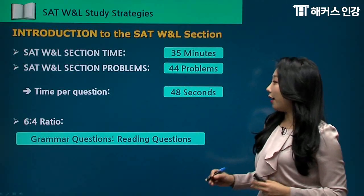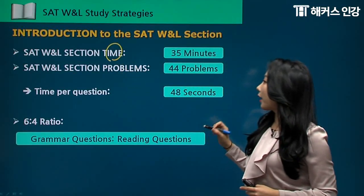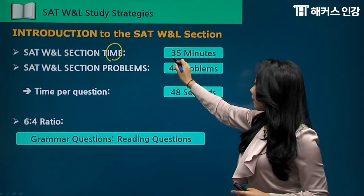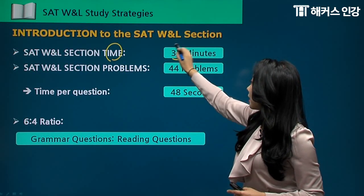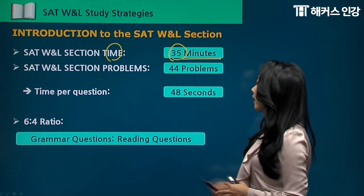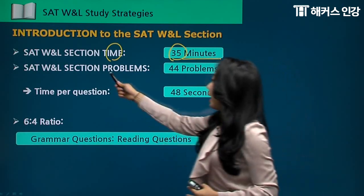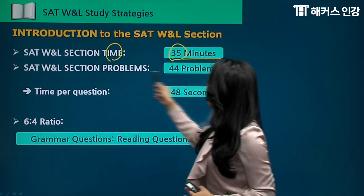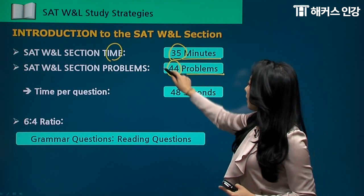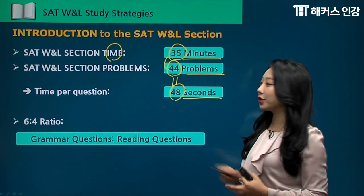Introduction to the section itself. The time you'll be given for solving the problems on the writing language section is exactly 35 minutes, so a very short test compared to the other sections — math and reading. There will be 44 problems in total, which amounts to actually 48 seconds per question.